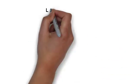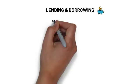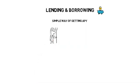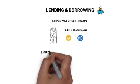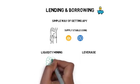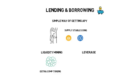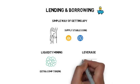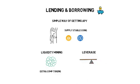Lending and borrowing is a fairly simple way of getting APY on your capital. Farmers can, for example, supply stablecoins such as DAI or USDC on one of the lending platforms and start getting a return on their capital. Liquidity mining and leverage can supercharge that. For example, farmers can get rewarded with extra COMP tokens for lending and borrowing on Compound. They can also borrow funds with their collateral to buy even more coins, which comes with a risk of potential liquidations.